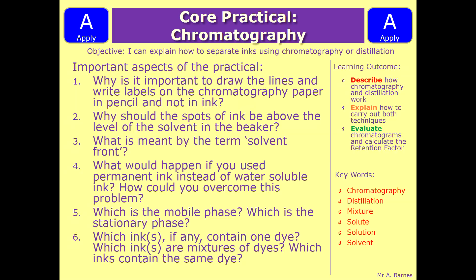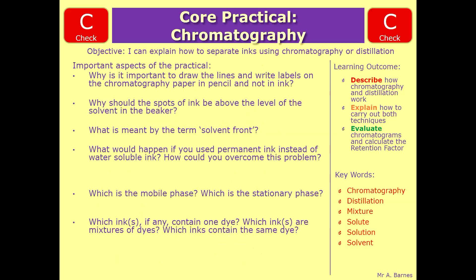So we're going to go through each of those sections very quickly and then we're going to have a look at some example questions. Starting with the first one: why is it important to draw the line and write labels on the paper in pencil and not ink? The key thing is if you do it in ink, which is soluble, that will get carried up the paper as well so you won't know where your starting point was. Pencil is insoluble and it will not get carried up the paper.